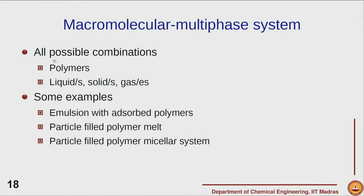After reviewing macromolecular and multiphase systems by themselves, all possible combinations of these also exist. In fact, more often than not, commercial systems actually combine both macromolecules and multiple phases. For example, polymers together with two liquids, different solids, and gas are common. Foam is a mixture of gas and liquid, and to modify the properties of the interface, materials such as protein or other polymers can be used. So a foam actually contains liquid, gas, and polymer.